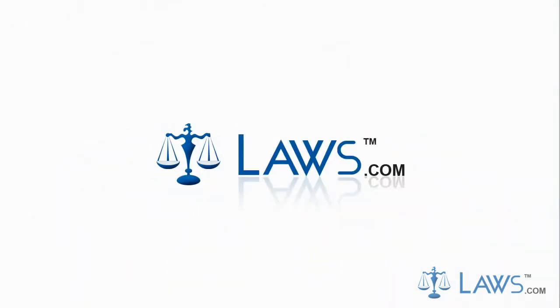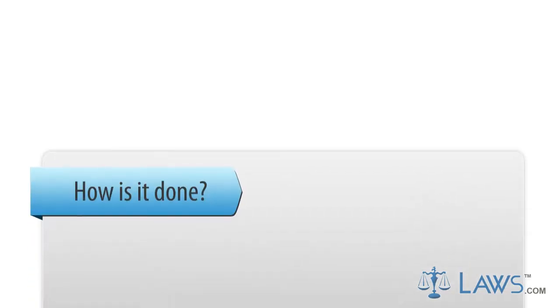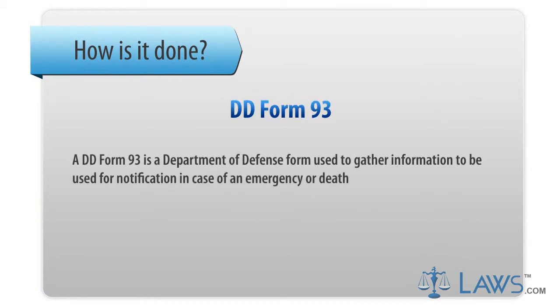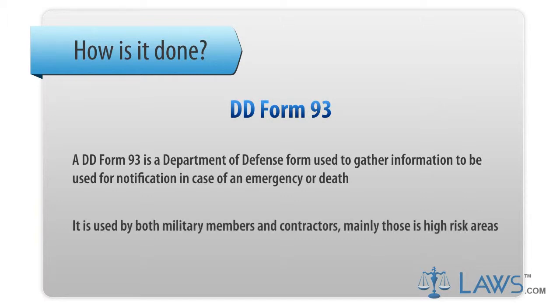Laws.com Legal Forms Guide. A DD Form 93 is a Department of Defense form used to gather information for notification in case of an emergency or death. It is used by both military members and contractors, mainly those in high-risk areas.